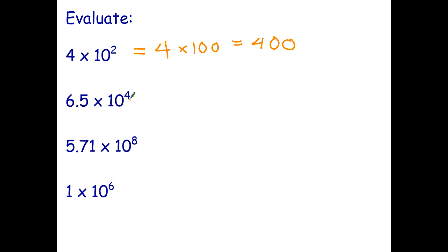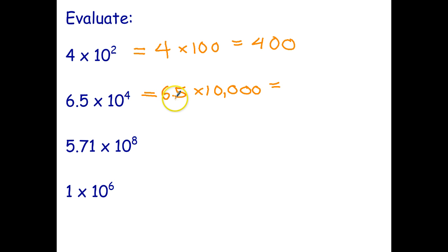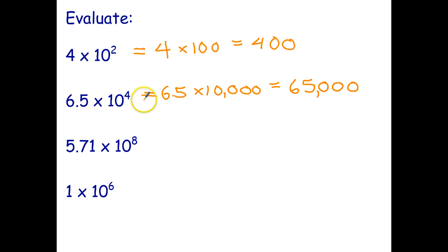6.5 times 10 to the fourth. That's going to be 6.5 multiplied by 10 by 10 by 10 by 10, which is 10,000. The fast way to multiply by a power of 10 is to just move the decimal point. I've got to move that decimal point four places to the right: one, two, three, four places. So 6.5 times 10 to the fourth can be written as 65,000.